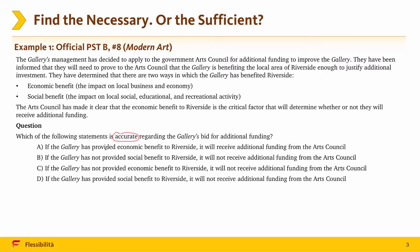Option A: If the gallery has provided economic benefit to Riverside, it will receive additional funding from the Arts Council. Option B: If the gallery has not provided social benefit to Riverside, it will not receive additional funding from the Arts Council.